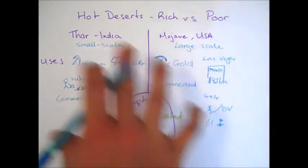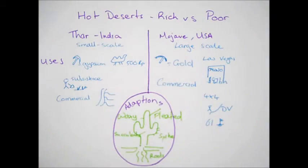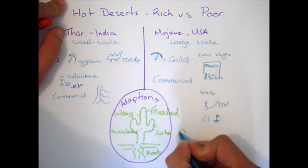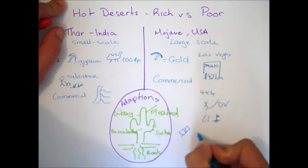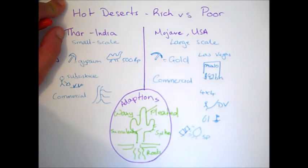Now, this is where perhaps the similarities start to end because obviously the economic opportunities and uses are much greater in the Mojave Desert. We've also got things such as renewable energy, things like solar power and hydroelectric power. You've got the Hoover Dam, which goes across the Colorado River. It provides power for over one million people. So, it's a really nice economic opportunity that they can sell that power back to the grid for these renewable energy sources.